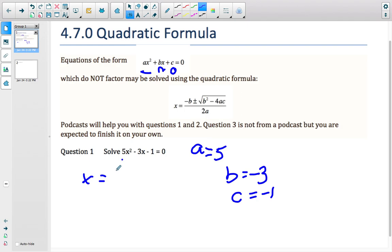Now, negative b is negative negative 3, which becomes positive. Excellent. A very common mistake for getting our signs, isn't it? And then plus or minus, because we're going to have two answers. So we have negative 3 all squared, which would give us 9. So negative 3 times negative 3, positive 9. And then we have minus 4, and I'm going to put these in brackets, times 5, which is our a, times negative 1.